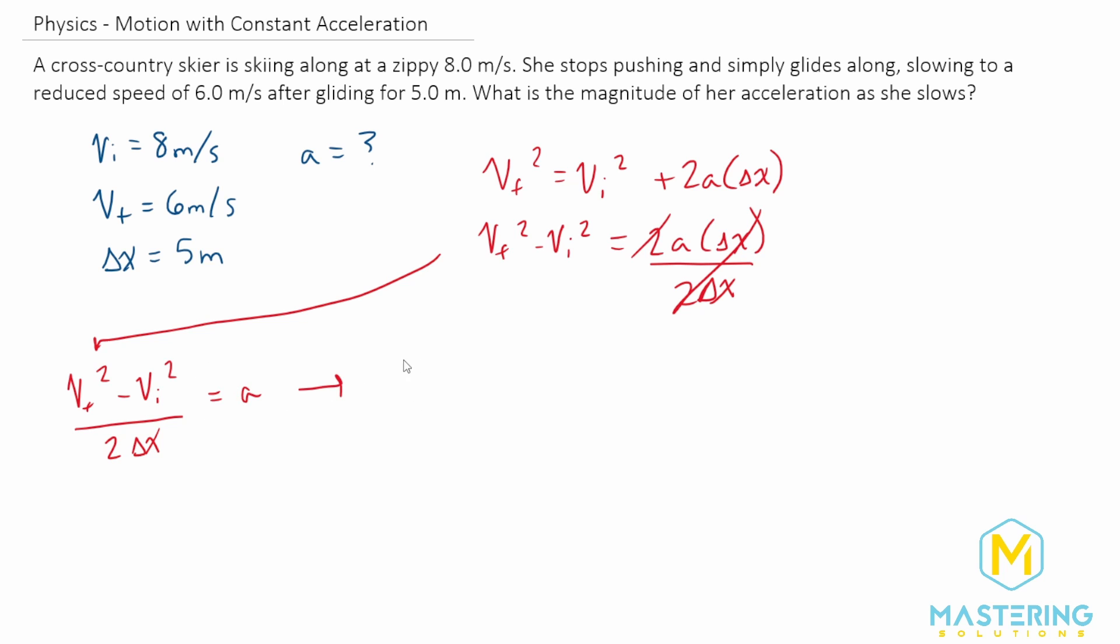So when we do that, we have the final velocity is 6 meters per second, and then we'll be squaring that whole thing minus the initial, which we said was 8 meters per second, and we'll square that. And then we'll divide that whole thing by 2 times the distance, which we said was 5 meters for the delta x.